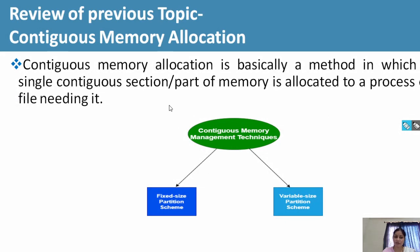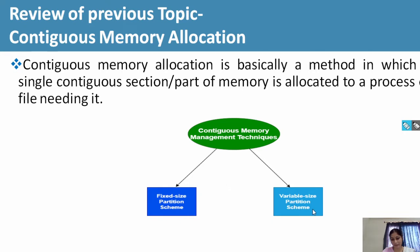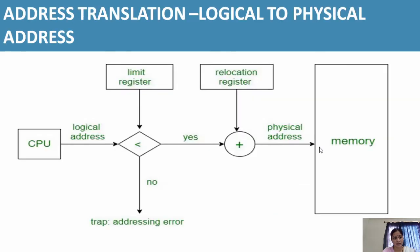Let's have a quick recap of the previous topic we covered: contiguous memory allocation. Contiguous memory allocation is basically a method in which a single contiguous section of memory is allocated to a process or file needing it. It includes fixed-size partitioning scheme and the variable-size partitioning scheme. In the variable-size partitioning scheme we covered the first fit algorithm, best fit algorithm, and the worst fit algorithm.